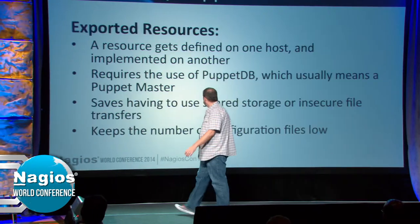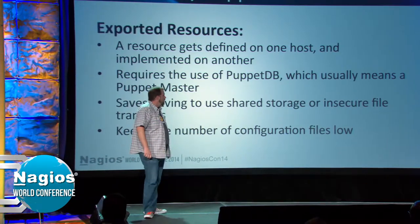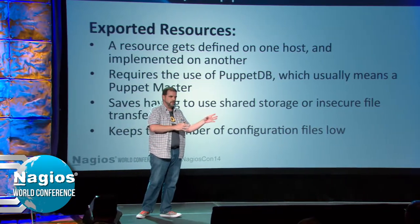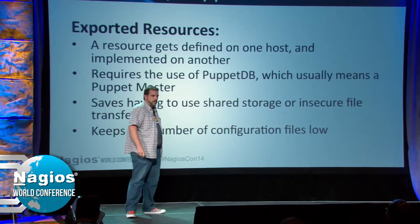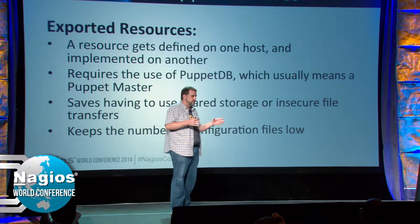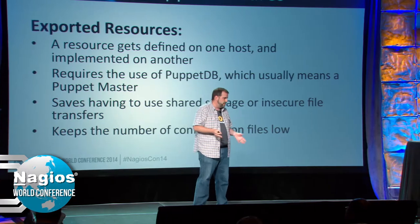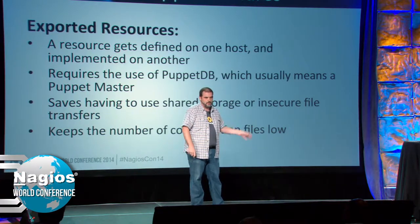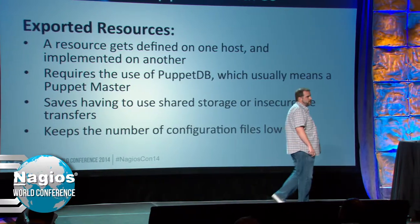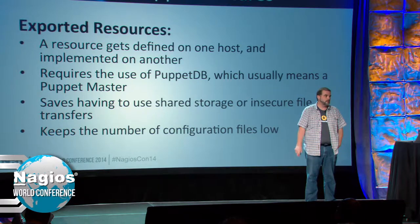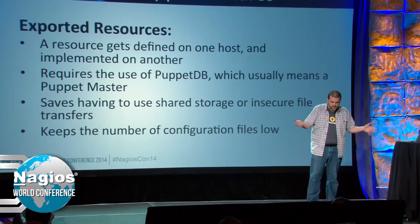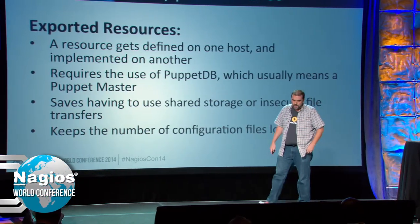An exported resource is a resource defined on one host but implemented on another. This is absolutely key — you don't have to use shared storage or file transfer to get information from one host to another. It requires PuppetDB, which means for practical purposes you need a Puppet master. A lot of people like to run masterless Puppet deployments, and this approach isn't really going to work for that, so keep that in mind.